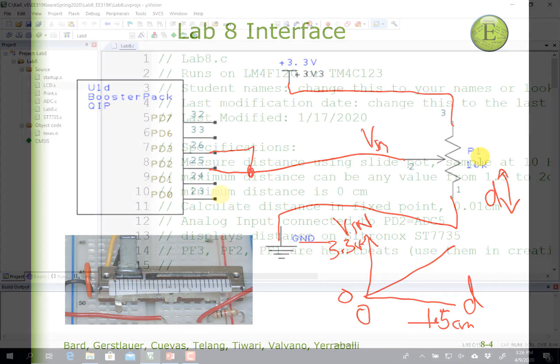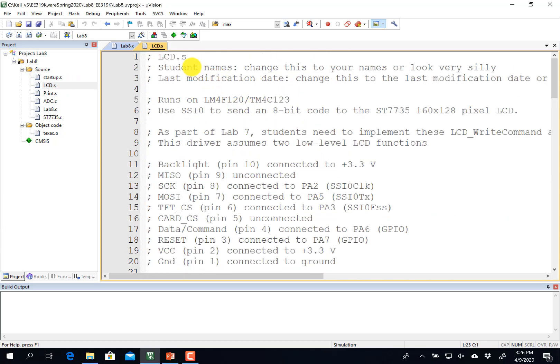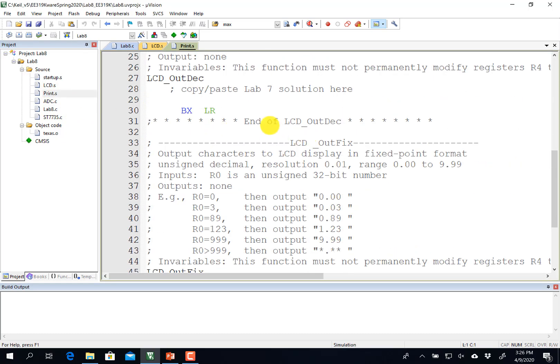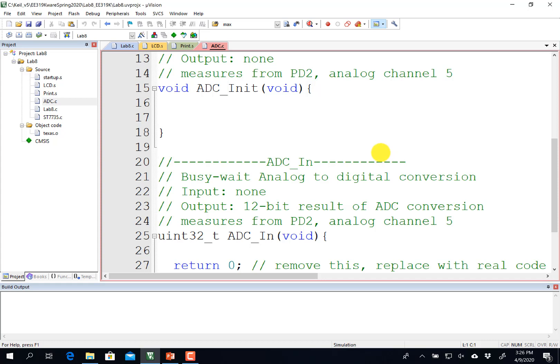Let me show you the software. This is the Lab 8 starter project, and I haven't done anything to it yet, but let's review the components. You will see two files that you've seen before, lcd.s and print.s. And in here, what you're going to do is paste in your solution from Lab 7. So that's your solution to the low level, and then you're going to paste in your solution to OutDec and OutFix, because we're going to use them here. That's the Lab 7 stuff.